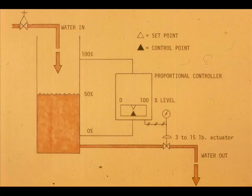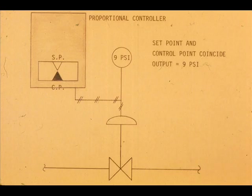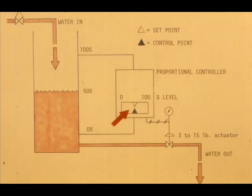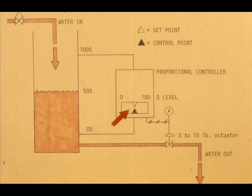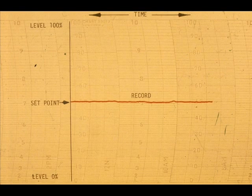This proportional level controller is controlling the tank level. The set point and the control point are together. What should be the output air pressure? It should be 9 psi for a well-aligned proportional controller. Since the control point and set point of our level control are together, the response curve or record will look like this.